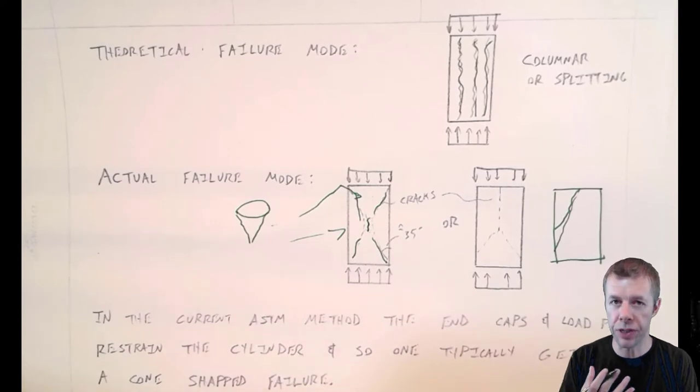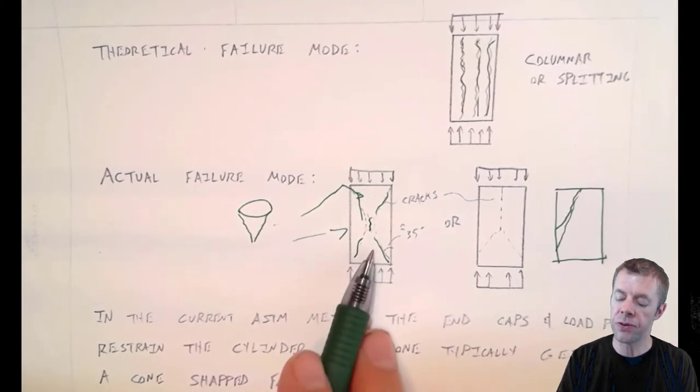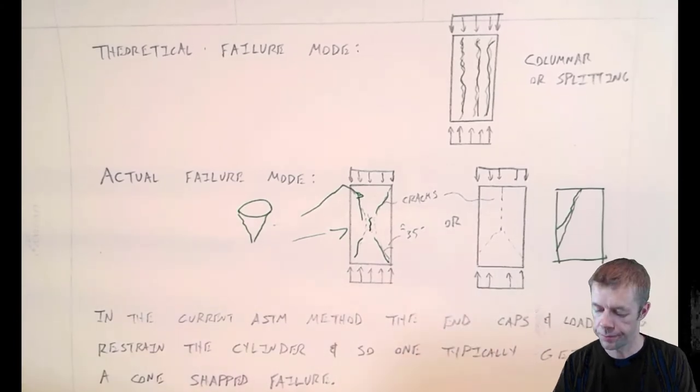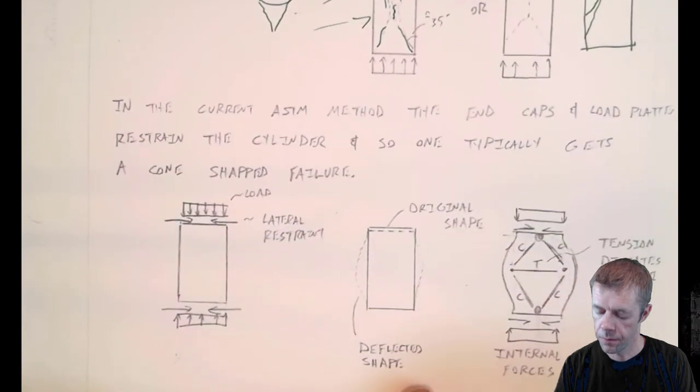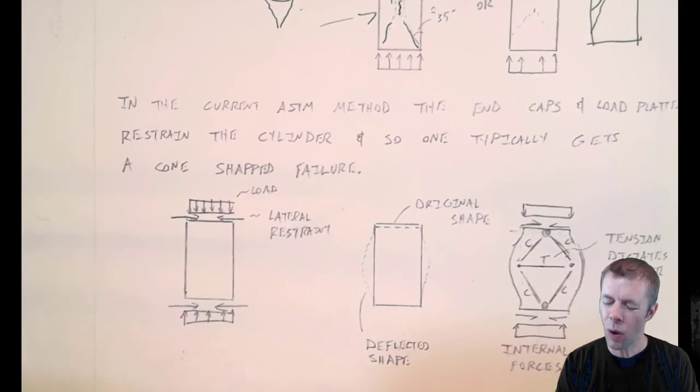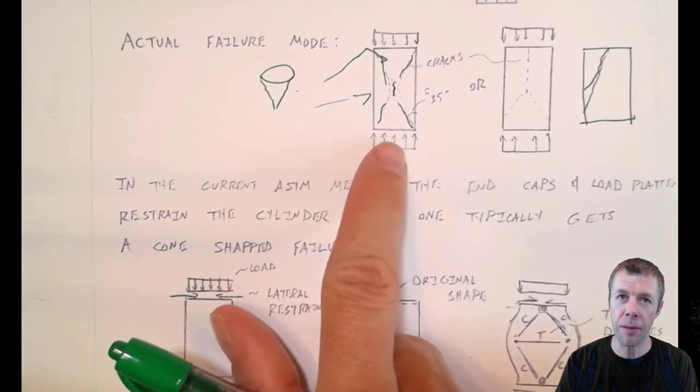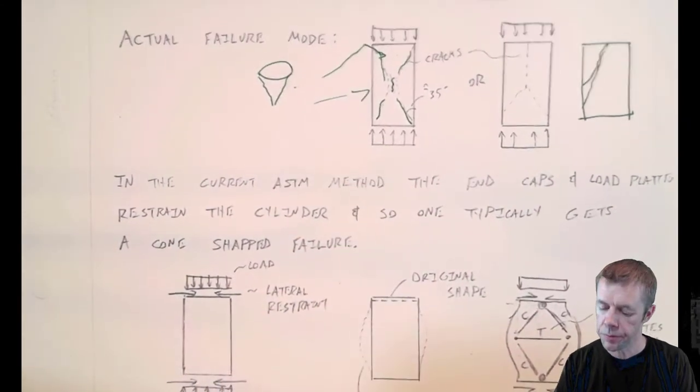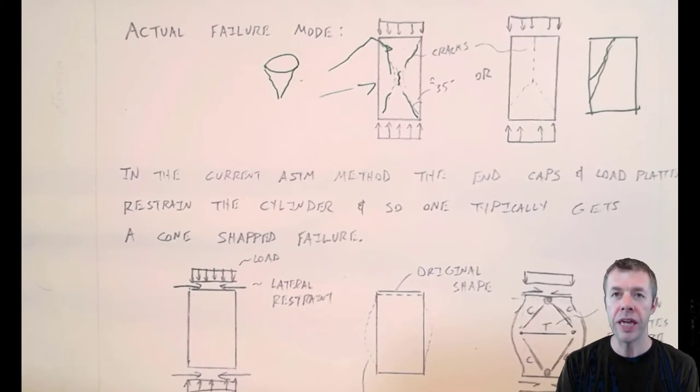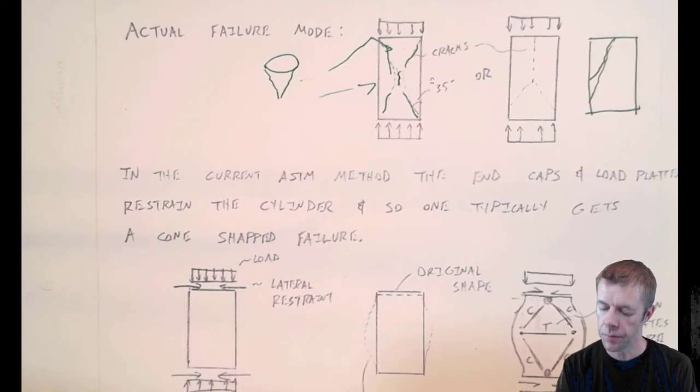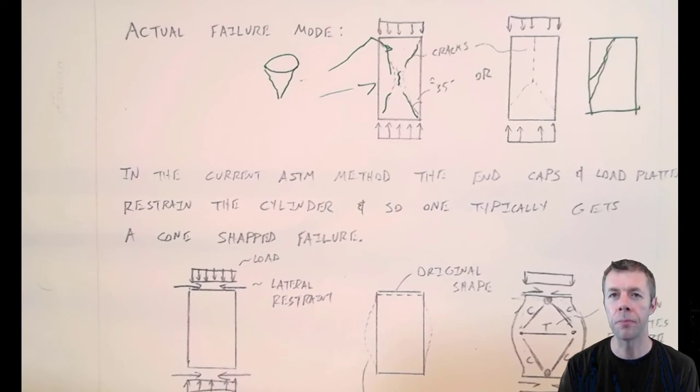While it's still accepted by the ASTM, one of these two is the failure mode that we're shooting for or looking for. So why does this happen? Why does this kind of strange shape happen? Well, in the current ASTM method, the end caps, that's the metal caps on the top and the bottom, and the load platen, they help restrain the cylinder. They help hold it back at the top. So one typically gets this cone shape failure.